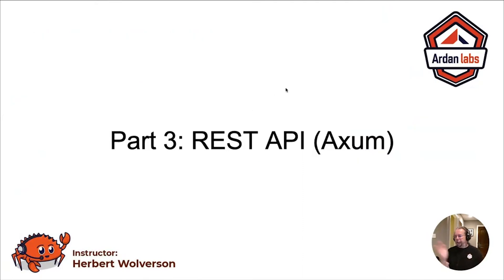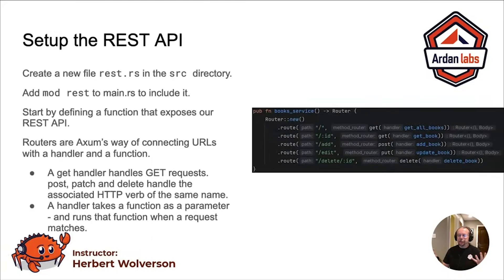We've got ourselves a database, a data layer. Now let's fire up Axum and create a REST API to consume it. Axum is very similar to Express on Node.js in the sense that when you fire it up, you specify a router, and that router maps between URL routes and functions and the verb that activates them.